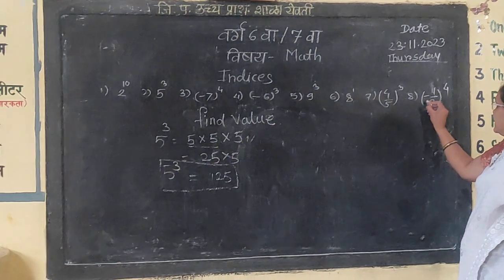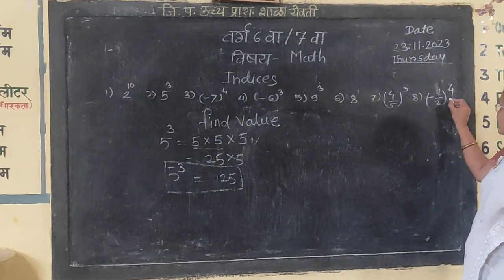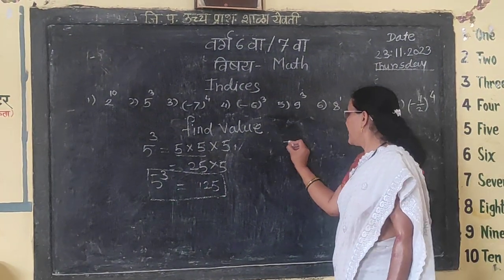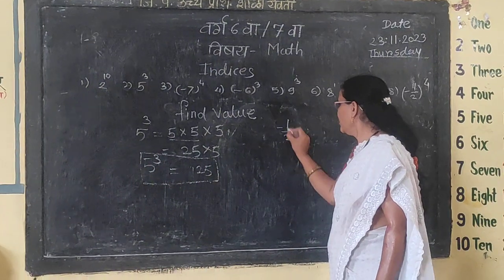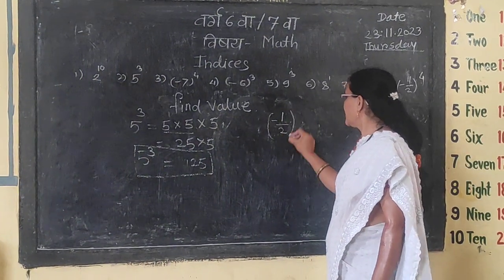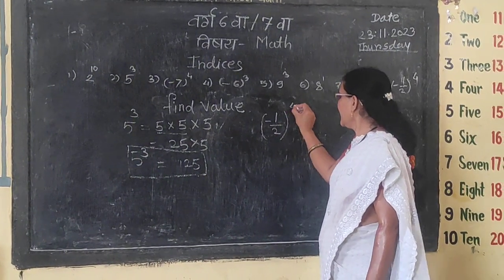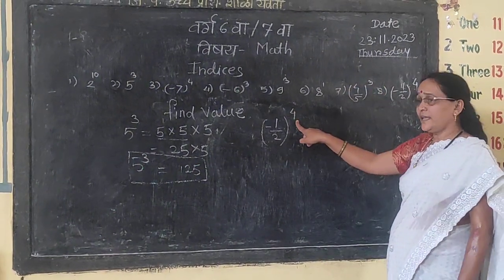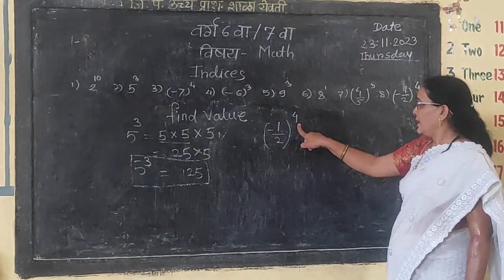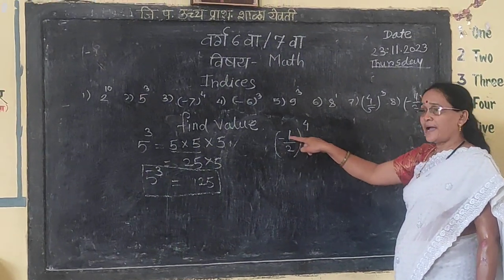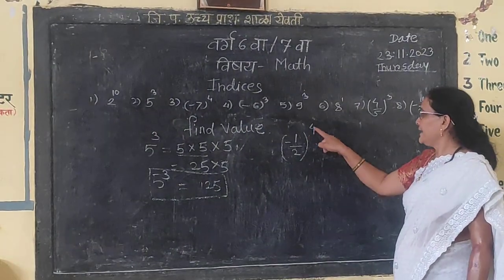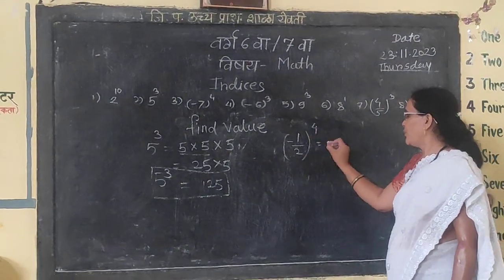Minus 1 upon 2 raised to the power 4. Base is minus 1 upon 2 and index is 4.